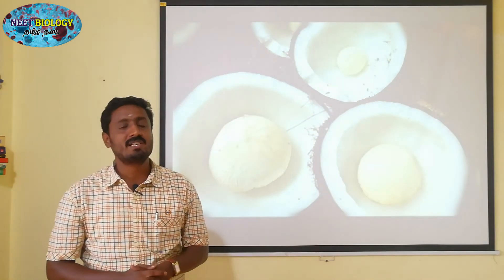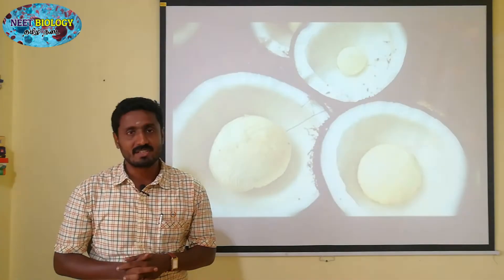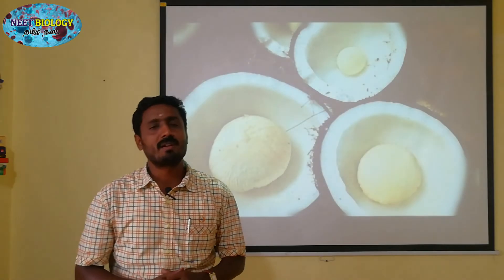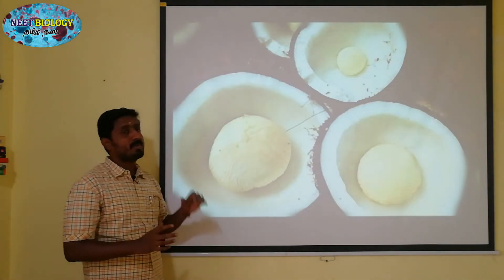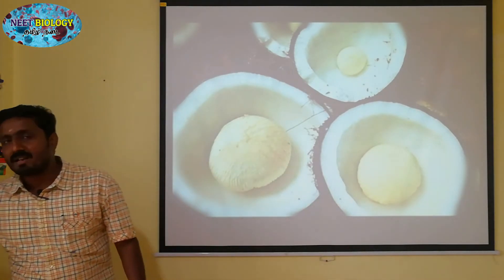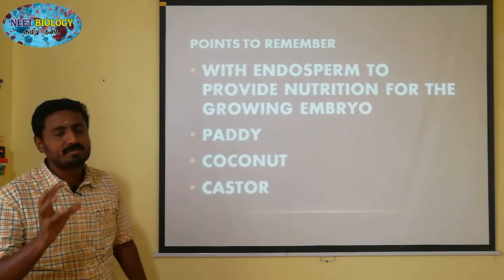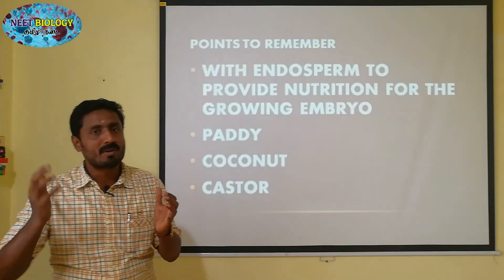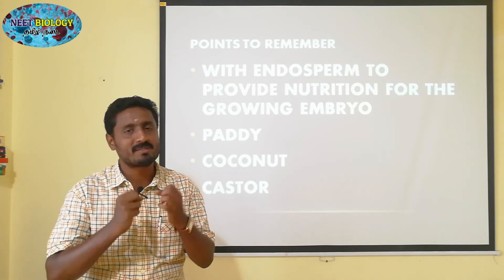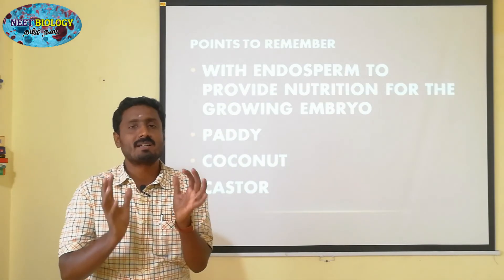Looking at the seeds, the endosperm is highly nutritious. That is why the embryo is very nutritious. That is why it is called paddy and castor. So, the endosperm will develop at a stage, and these are called endospermous or albuminous seeds.